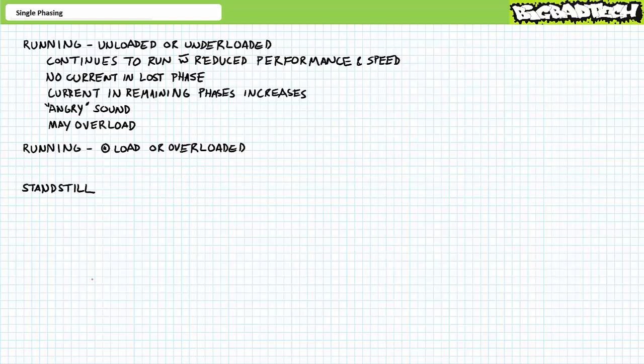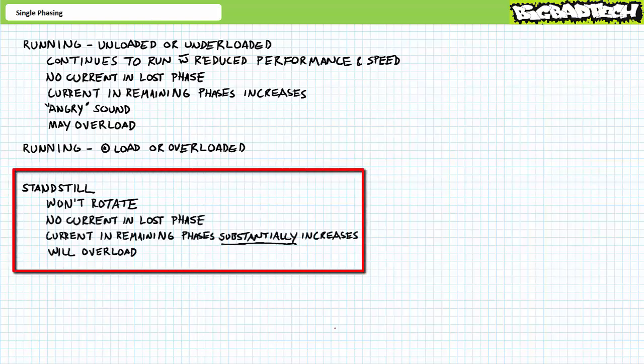In contrast, a motor single phased at rest might not even start rotating, because the loss of a single phase means the rotating magnetic field produced by the stator is not properly established. Given motors at rest experience a large surge of inrush current, with the rotor locked in place, current drawn by the remaining phases will be many times rated current. This motor will quickly enter an overload condition, and lacking overload protection, will rapidly damage or destroy itself.